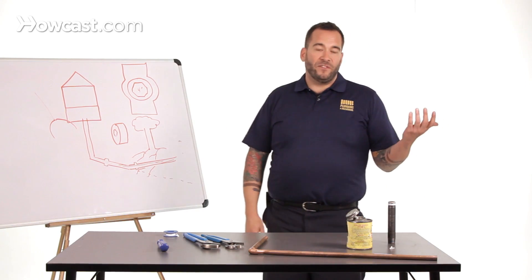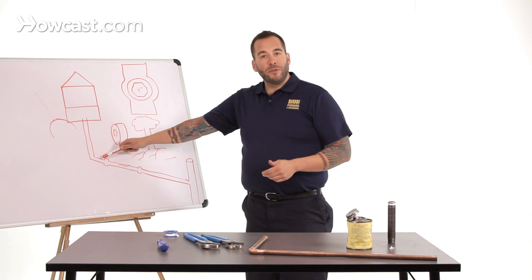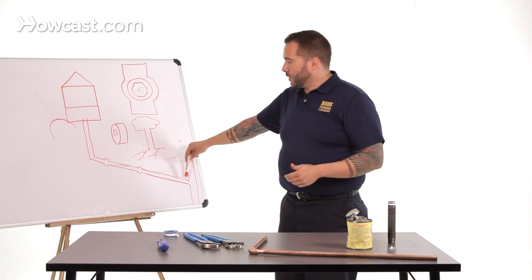That's $10,000, $15,000, $20,000 worth of work. So, let's eliminate the sag from the equation for a second, and now we've got a properly installed, properly pitched sewer line.